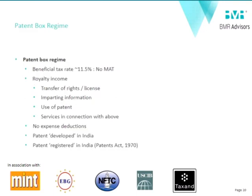Moving on to the patent box regime — a very positive move from the Indian government. While most other countries are marginalizing their tax incentive regimes, India has introduced a new patent box regime offering an incentivized rate of 10% on all royalties earned by persons who have developed and registered patents in India. This royalty income eligible for the beneficial 10% rate will also not suffer minimum alternate tax. These benefits are available only to the true and first owner who registers the patents in India — a move to encourage innovation and prevent migration of IP to offshore locations.